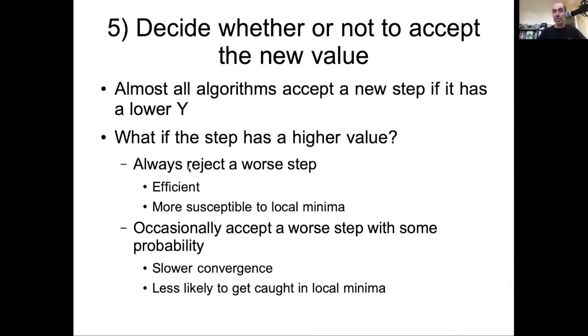So what do you do if you have a higher value? There's algorithms that always reject a step that goes uphill. That's efficient, but it's more susceptible to local minima. And then there's algorithms that will occasionally accept a worse step with some probability. The fact that it's accepting things probabilistically makes this a stochastic algorithm, which is why I said it's associated with those stochastic methods. This is slower because if you're trying to go downhill and you start walking uphill, it's going to take you longer to find the bottom of the hill, but it also makes you less likely to get caught in a local minima. You're not going to stop in any little divot, because you're going to keep looking around to see if you can find better values.